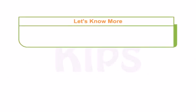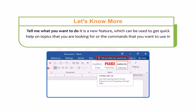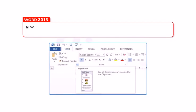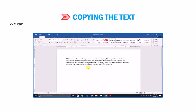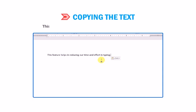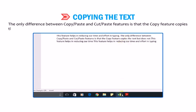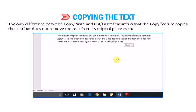Another interesting option in MS Word 2016 is Tell Me What You Want To Do — a new feature to get quick help on topics or commands. In Word 2013, Cut, Copy and Paste buttons are present in the Clipboard group on the Home tab. Copy and Paste options are used to duplicate the text — you can copy text within a document or from one document to another. The difference between Copy/Paste and Cut/Paste is that Copy does not remove the text from its original place, whereas Cut does.